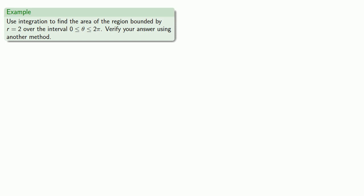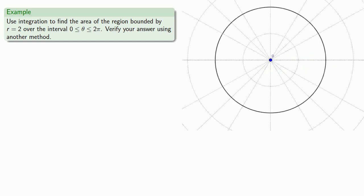So let's try it out, and because this is a new method, let's make sure that it actually works in a case where we know what the answer is supposed to be. So let's use integration to find the area of the region bounded by the curve r equals 2 over the interval theta between 0 and 2π. So first we'll graph the region. And since r is always equal to 2, then our distance from the pole is always 2, which means that this region will be a circle with radius 2, and we know the area.